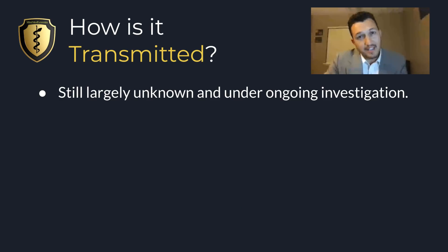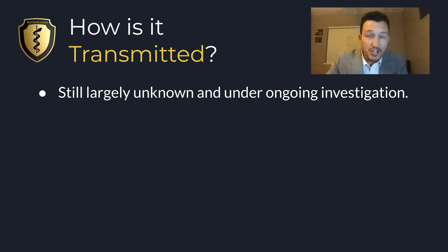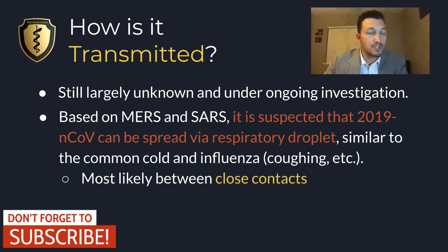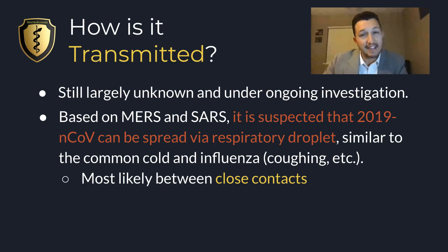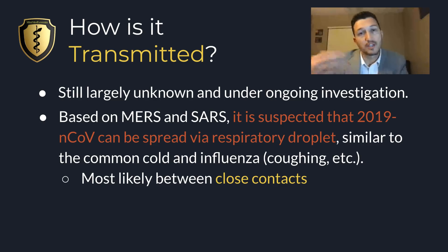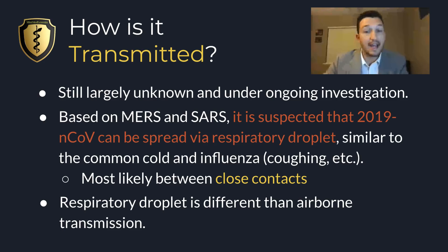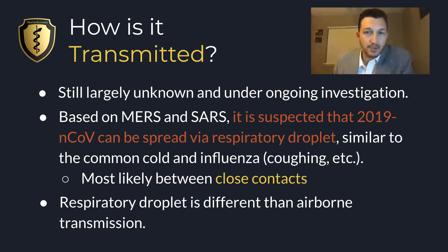A huge question so many people are asking is: how is this transmitted and how can I prevent it? That's still largely unknown and under ongoing investigation. Based on what was observed with MERS and SARS, it's suspected that the 2019 NCOV can spread via respiratory droplet, similar to the way a common cold or influenza is spread — coughing, sneezing, generally between people who are within close contact. Respiratory droplet transmission is different from airborne transmission like we see with tuberculosis, and generally requires close vicinity to another person.